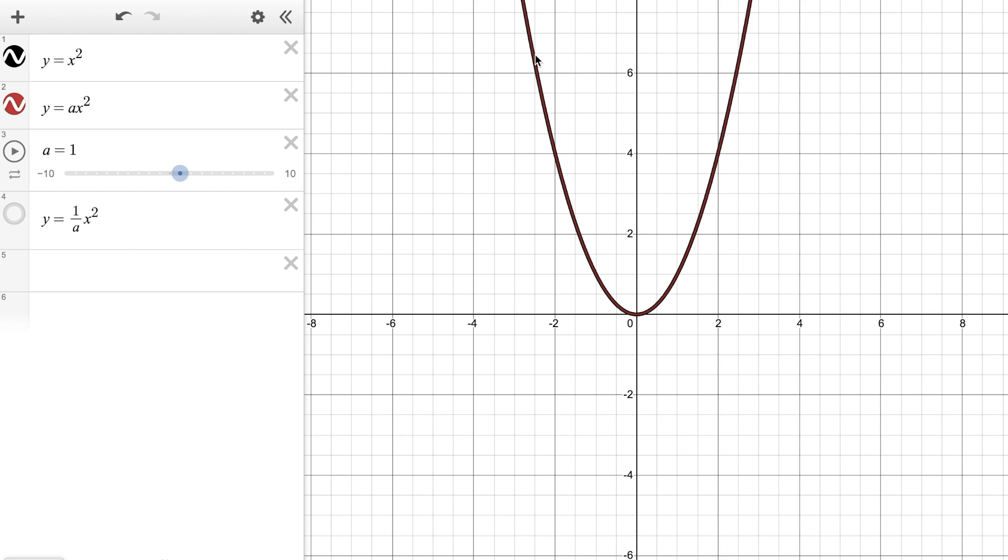So what I've done here is I've just graphed the equation y equals x squared. As we know that's a very basic parabola passing through zero zero. If I sub in one I get one. If I sub in two I get four and so on.